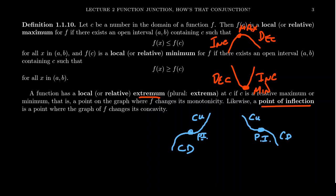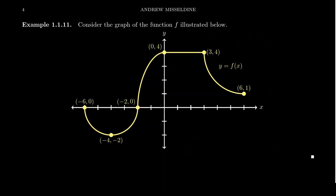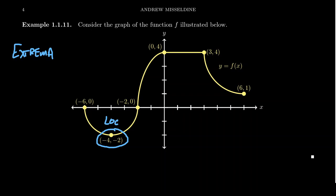We want to be able to visually identify local extrema and points of inflection. Let's return to our graph from a previous video and look for the extrema. This is something we can identify just by inspecting the graph. The first obvious candidate is the point (−4, −2) — this represents a local minimum on the graph, because in that neighborhood, no value is smaller than it.